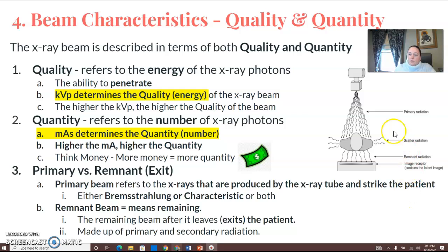The remnant beam is what remnant means remaining. So it's the beam that passes through the patient and remains after exiting the patient and strikes the image receptor. It can be made up of both primary and secondary radiation.